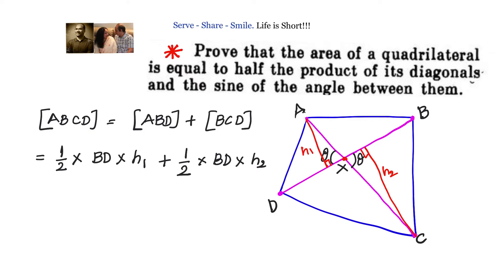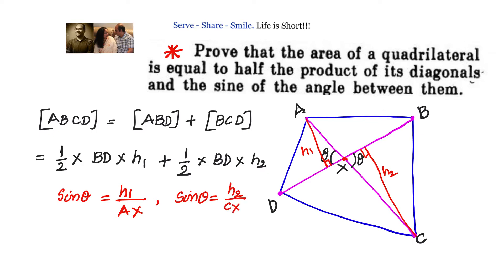Since we have taken the angle as theta, we can see clearly that in this triangle sin theta equals H1 divided by AX. Similarly, when we go to the other triangle, sin theta equals H2 divided by CX.